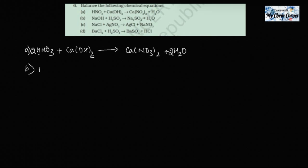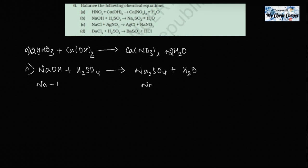That's how you balance the equation. If you can't just look at it and balance it, you can always write out the element counts. Let's move to the second one: NaOH plus H₂SO₄ giving Na₂SO₄ plus H₂O. Sodium: one on the left, two on the right. Hydrogen: two plus one equals three on the left, two on the right. Oxygen: four plus one equals five on the left.